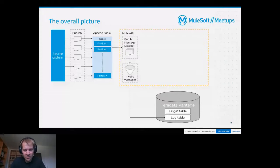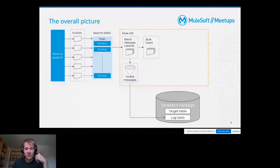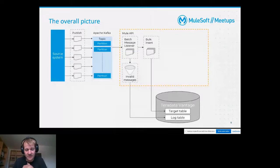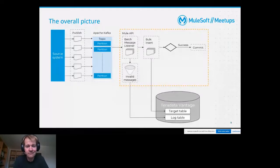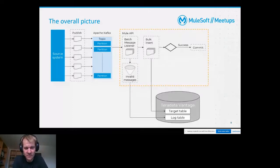When performing the following bulk insert, we have already cleansed the data a little bit. Now this is the point where we try to perform the bulk insert - inserting the data in array format into the Teradata target table. This can succeed in the first try, which is the case we expect and hope for, so that we can commit our whole transaction.